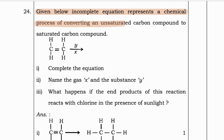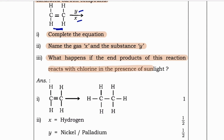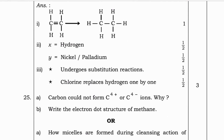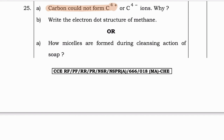Next question: The given incomplete equation represents a chemical process of converting an unsaturated carbon compound to a saturated carbon compound. C2H4 is given; complete the equation. Name the gas X and the substance Y. C2H4 becomes C2H6, X is hydrogen (H2), Y is nickel or palladium (catalyst). When the end product reacts with chlorine in the presence of sunlight, it undergoes a substitution reaction where chlorine replaces hydrogen one by one.